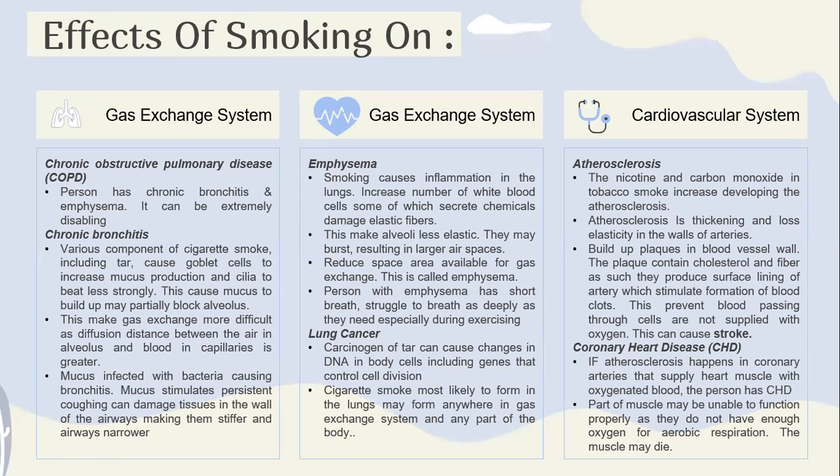The effect of smoking causing chronic bronchitis: various components of cigarette smoke, including tar, can cause goblet cells to increase mucus production and cilia to beat less strongly. This causes mucus to build up, which may partially block the airways, making gas exchange more difficult as the diffusion distance between the air and the blood in capillaries is greater. Mucus infected with bacteria causes bronchitis. Persistent inflammation can damage tissues in the wall of the airways, making them stiffer and the airways narrower.